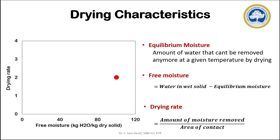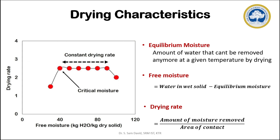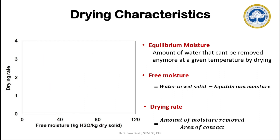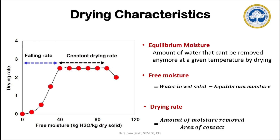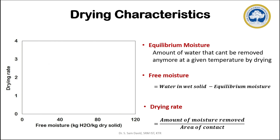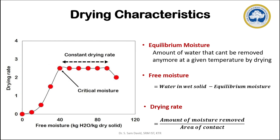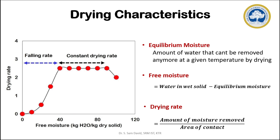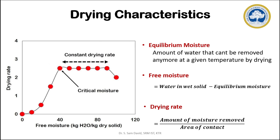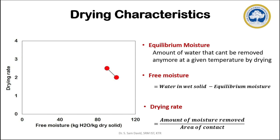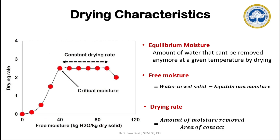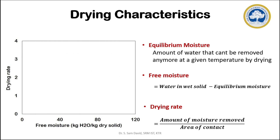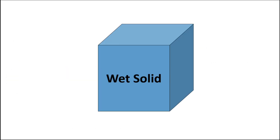As part of the experiment's objective, when we plot a graph between drying rate and free moisture, we can identify the physical phenomena happening in the drying process. From the graph, we can classify the drying process into two stages: constant drying rate and falling drying rate. When the drying process begins, the rate of drying increases and becomes constant. Beyond a particular point, the drying rate starts decreasing. The free moisture level at which the drying rate falls is termed the critical moisture content.